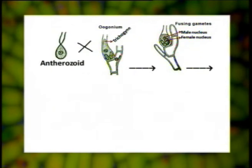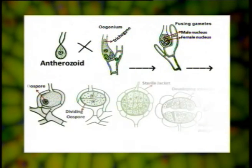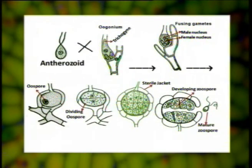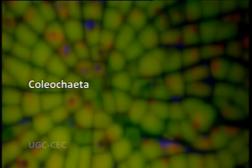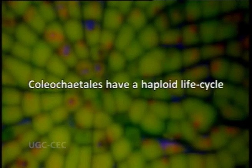The spermatozoids swim in the water and approach the oogonium. Just before fertilization, the tip of the trichogyne breaks down and some colorless protoplasm is extruded from the broken tip. Although many antherozoids approach the oogonium, only one enters. The flagella are withdrawn and the protoplast of the antherozoid approaches the egg and fuses with it. When sperm and egg unite they form a zygote, the only diploid cell in the life cycle of Coleochaete. Coleochaetales therefore have a haploid life cycle.